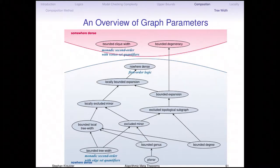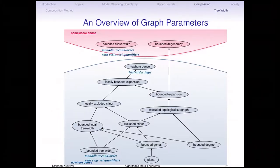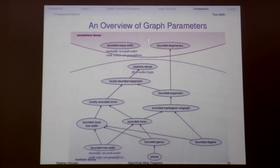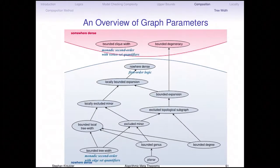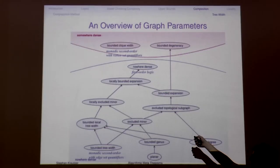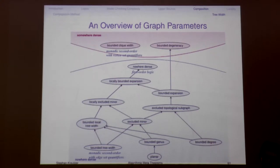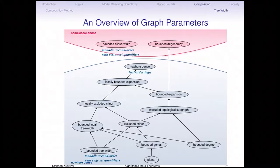We saw yesterday that for monadic second order logic where you're allowed to quantify over sets of vertices as well as sets of edges — called MSO2, which is technically just plain monadic second order logic on incidence encodings — we saw tractability on bounded treewidth graphs. Today we'll go further up in the first afternoon session, and see something more in the next session.